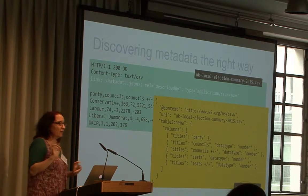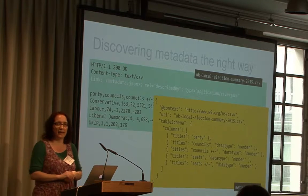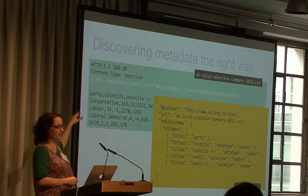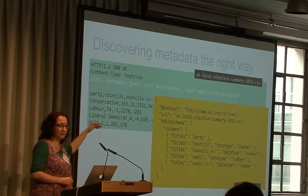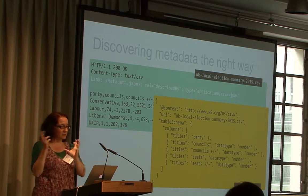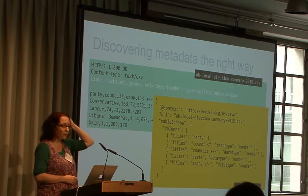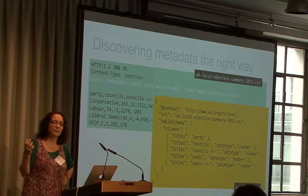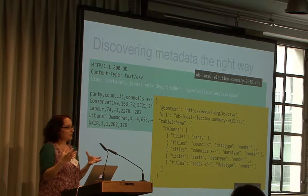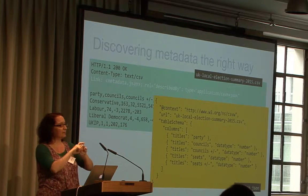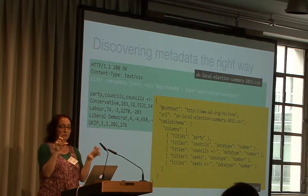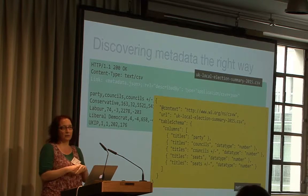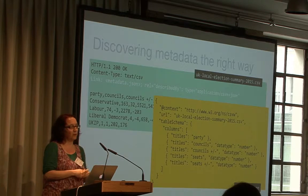So given that you've got a link to a CSV file, how do you, from that CSV file, locate the metadata you need to interpret it? The right way of doing this is using an HTTP link header. The link header can say, go look at this other file — metadata.json — that file describes this one, using a relation 'described by', and it's in the CSV on the Web JSON format. So you serve up the CSV file, you have a link header in the HTTP response pointing to the metadata, and then you can get those together. Only machines are going to follow that link, but that's okay.